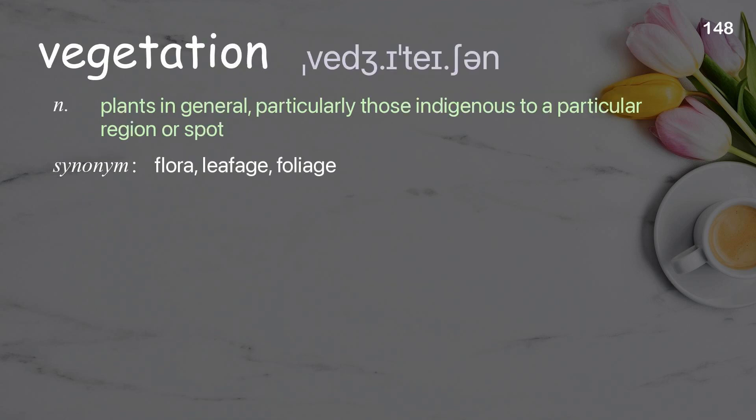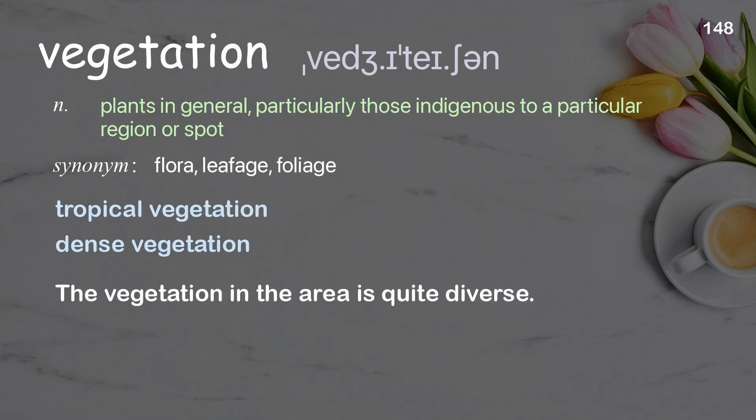Vegetation: plants in general, particularly those indigenous to a particular region or spot. Examples: tropical vegetation, dense vegetation. The vegetation in the area is quite diverse.